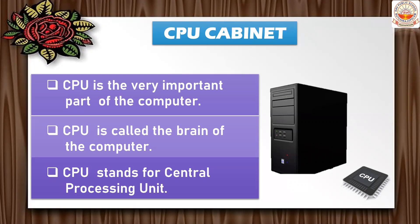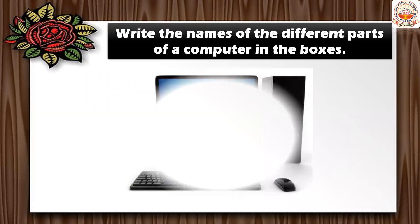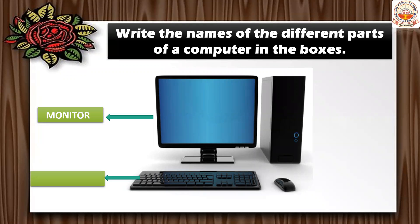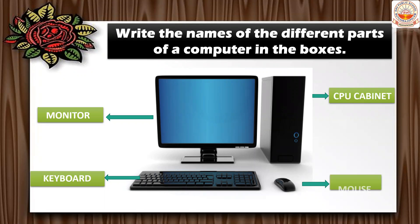Hope you have understood all about these four main parts of the computer. Now let me test you — write the names of the different parts of the computer in the box. The first part is a monitor. The next is a keyboard. Then the CPU cabinet — the brain of the computer. And the smallest part of the computer — the mouse.